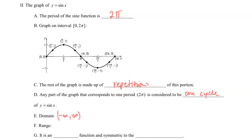The domain is negative infinity to infinity. The range on the y-axis is from negative 1 to 1, and since we actually have points at negative 1 and 1, we use brackets to indicate the range. Sine of x is an odd function, which means it has symmetry to the origin.